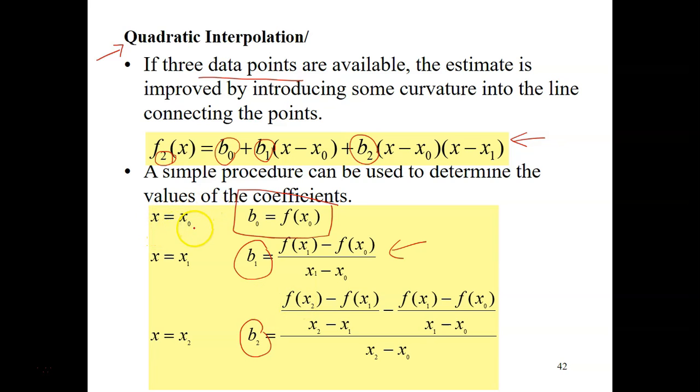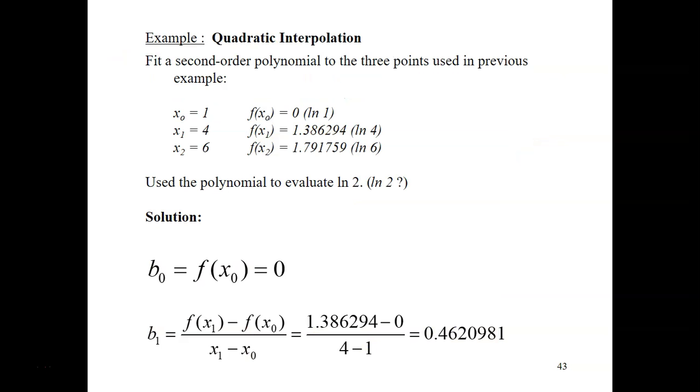Alright? So, when x equals to x0, b0 is just simply fx0. Alright? So, let's look at how you can work around for quadratic interpolation. Okay, so we have an example here. Fit a second-order polynomial to the three points used in the previous example. Previous example means in my previous video of the linear interpolation.